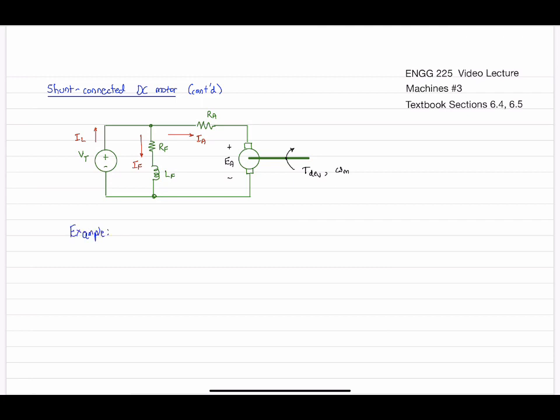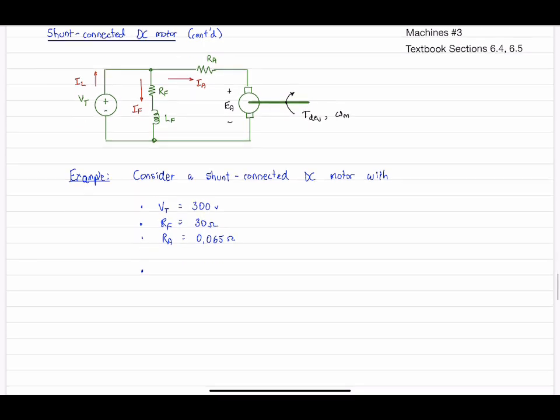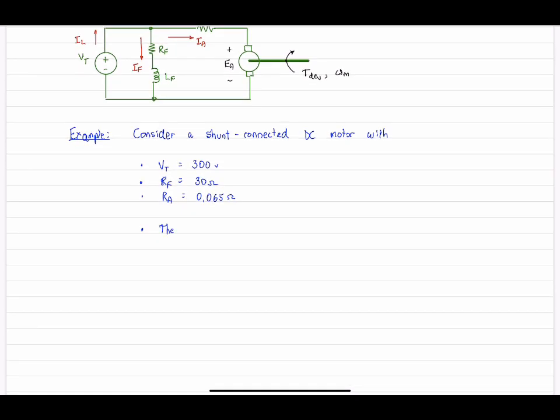So let's begin with an example of the above shown shunt-connected DC motor. The motor has the following specifications: terminal voltage is 300 volts, field resistance 30 ohms, and armature resistance is fairly small at 0.065 ohms.